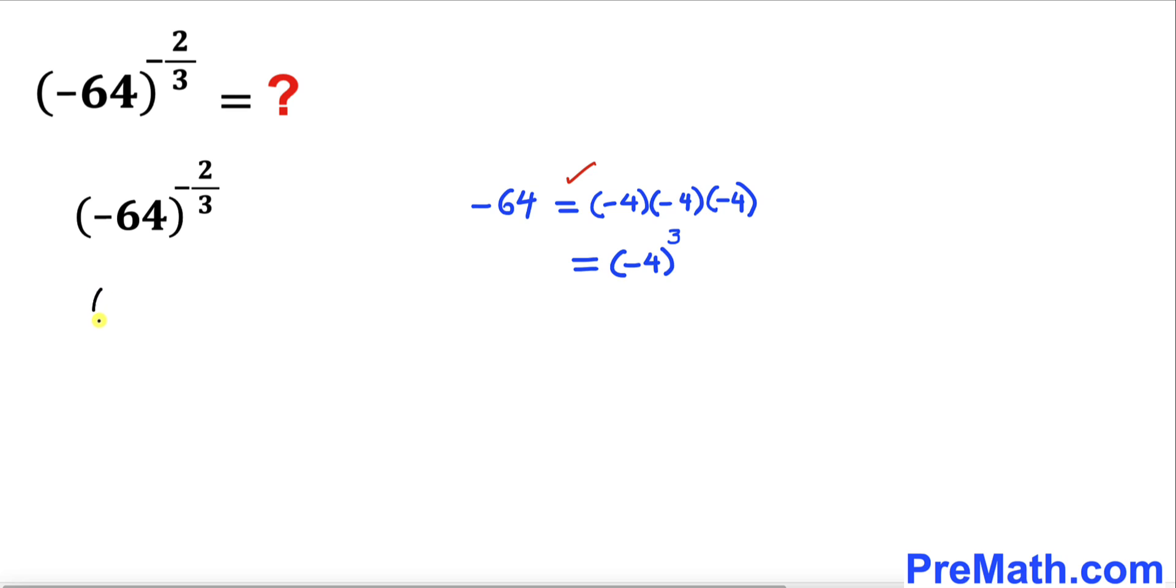Therefore, this could be written as negative 4 to the power of 3, and then we are going to raise that to the power of negative 2 over 3. Let's recall the power rule. According to this rule, we can multiply out these nested exponents 3 and negative 2 thirds.